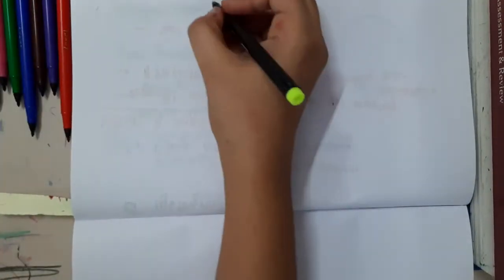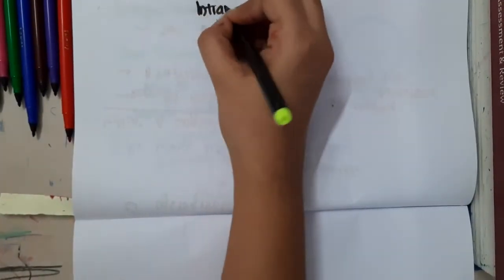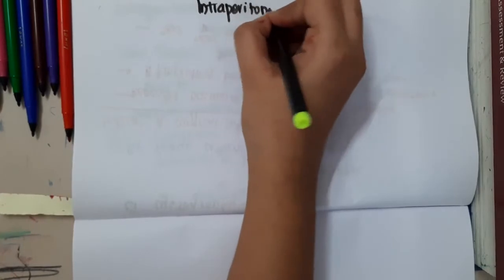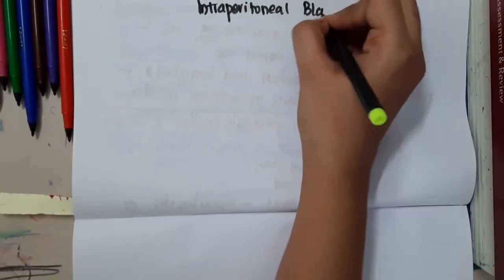Hello friends, let us now learn the second type of bladder rupture which is intraperitoneal bladder rupture.